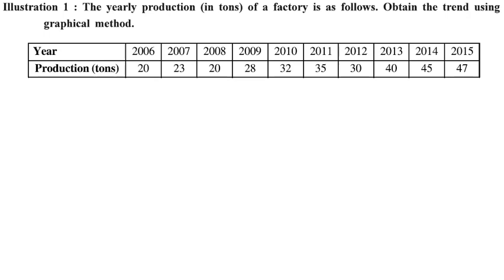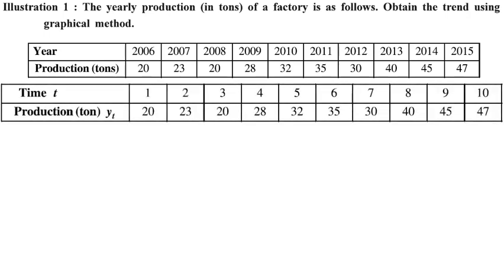The data gives years 2006 to 2015 and the production in tons. We will convert the time variable into simple numbers: 2006 becomes 1, 2007 becomes 2, and so on up to 10. No matter if the time variable is years, days, months, or weeks, we always convert it into simple numbers starting from 1. The production values are written as given. So for time 1 the production is 20, time 2 is 23, time 3 is 20, and so on.